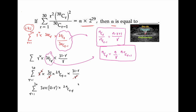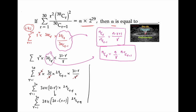Let us split these terms into two. We can write 31 - r as 30 - (r-1), so the expression becomes summation r = 1 to 30 of 30 · (30 - (r-1)) · C(29, r-1). Splitting: summation 30 · 30 · C(29, r-1) minus summation 30 · (r-1) · C(29, r-1).